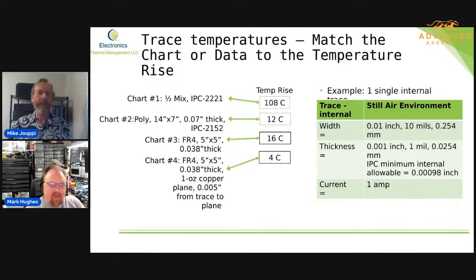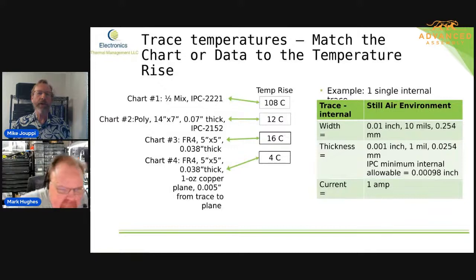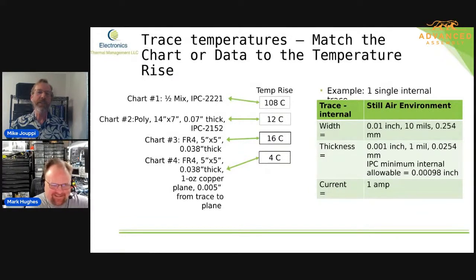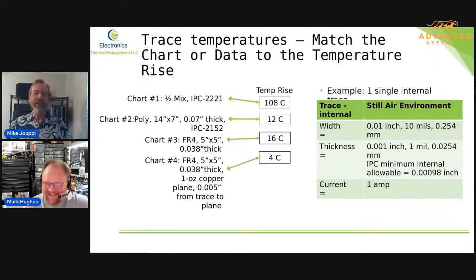As an engineer, if I'm looking at that 108-degree rise, I'd say that's unacceptable — I'm going to make the decision to go to heavier copper and wider traces. And that's not in your best interest. So for all of those out there designing to be green, stick with the internal charts from IPC-2221. But if you really want to know what the temperature rise is, you've got to do a little bit more homework.